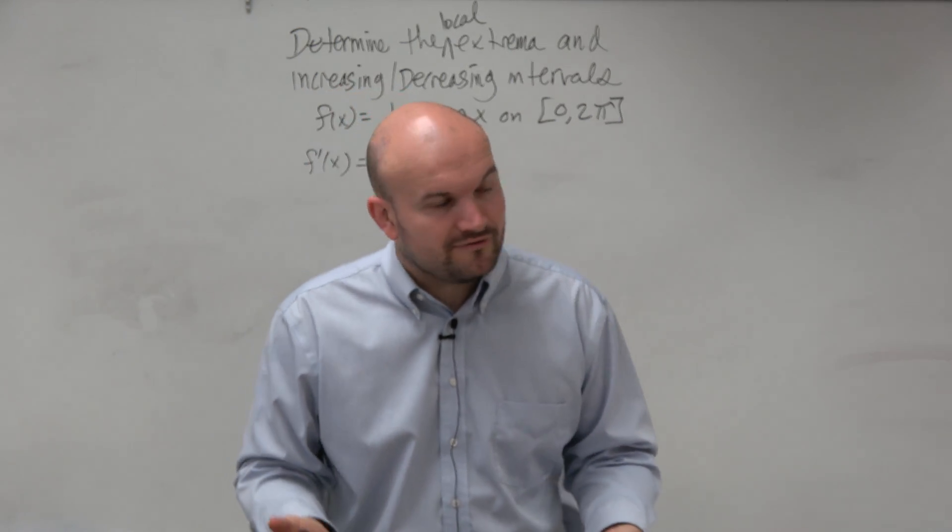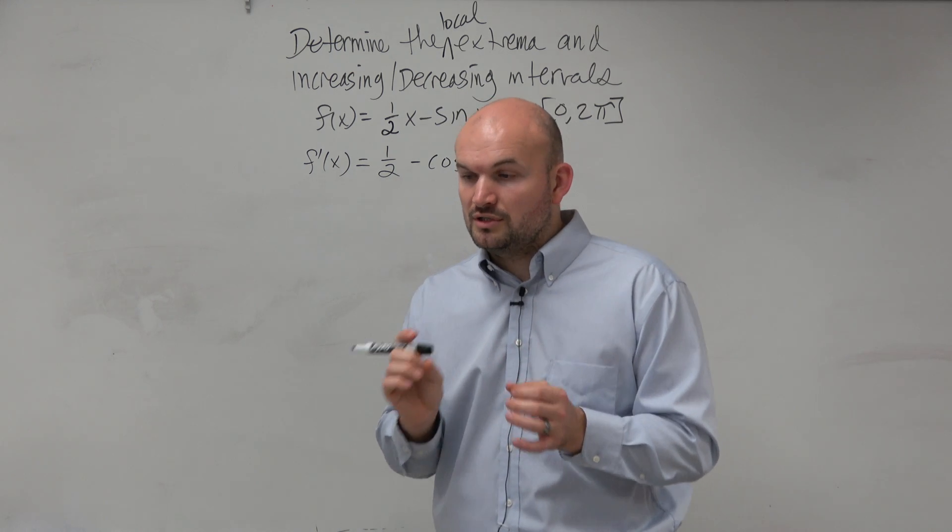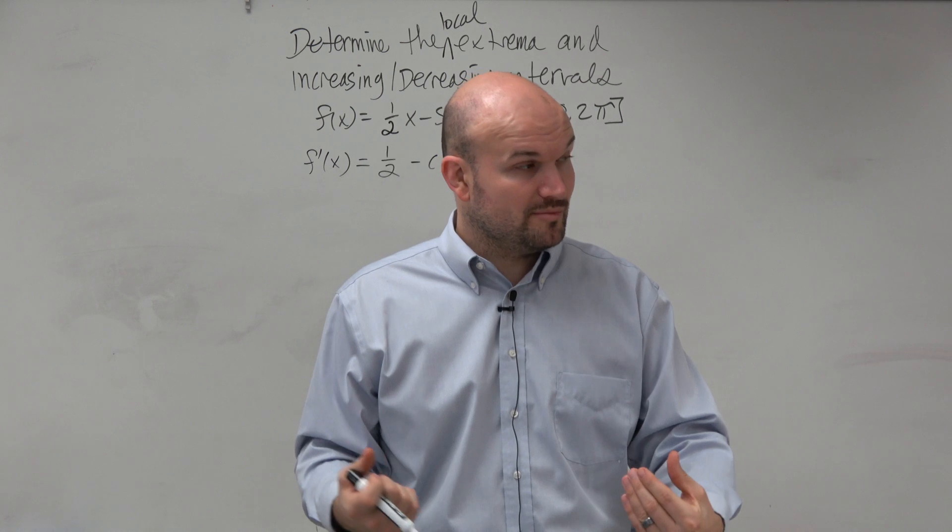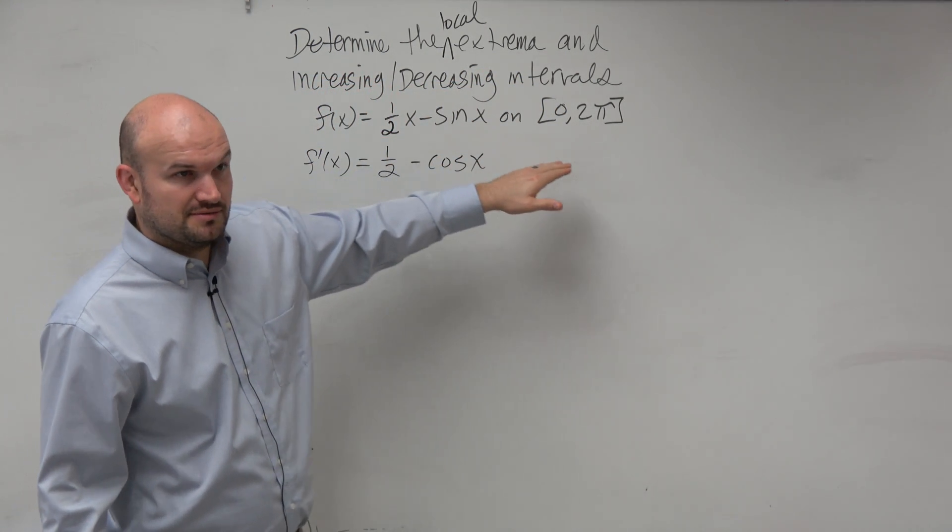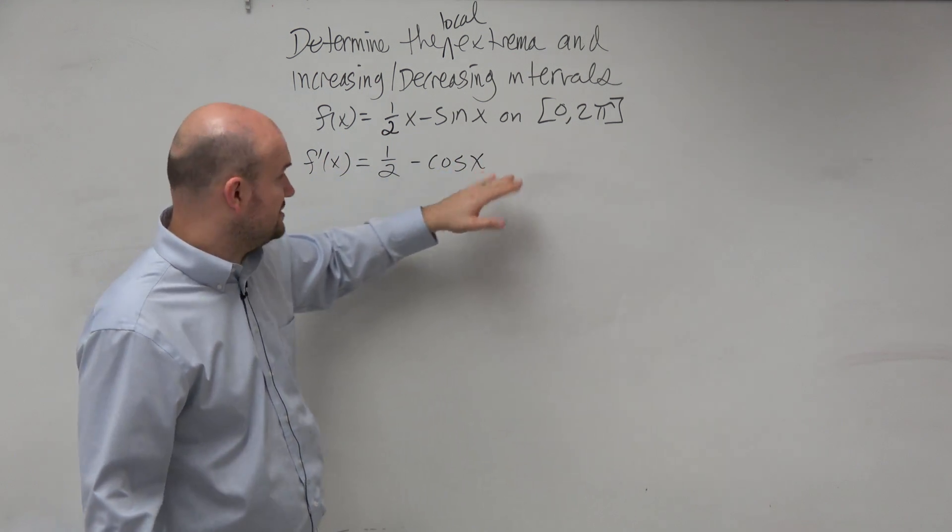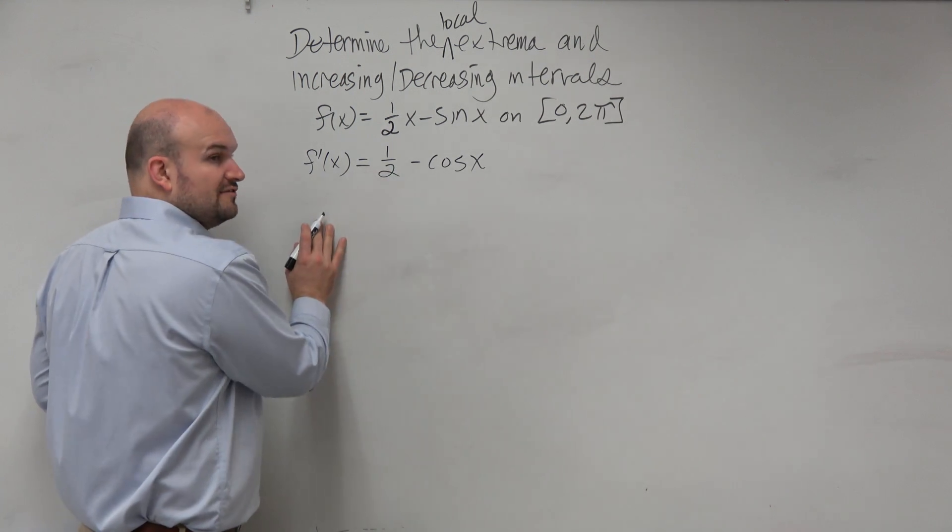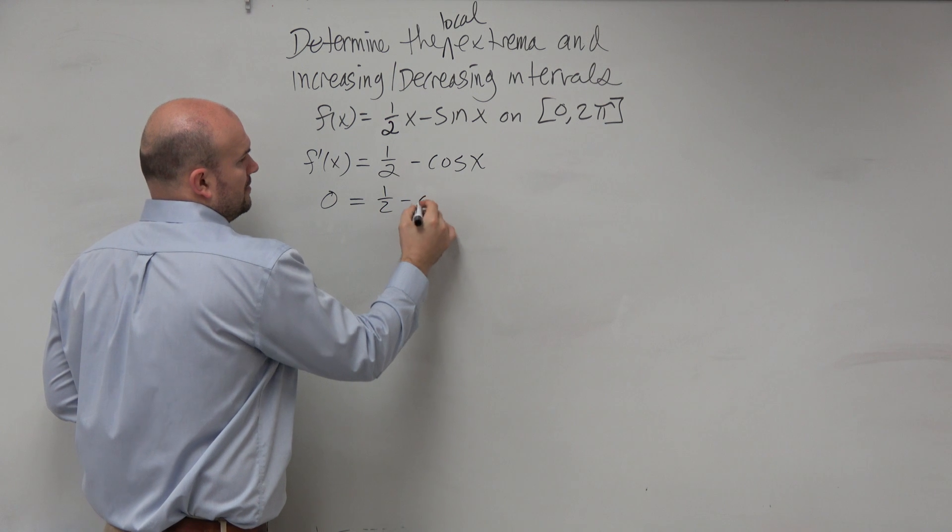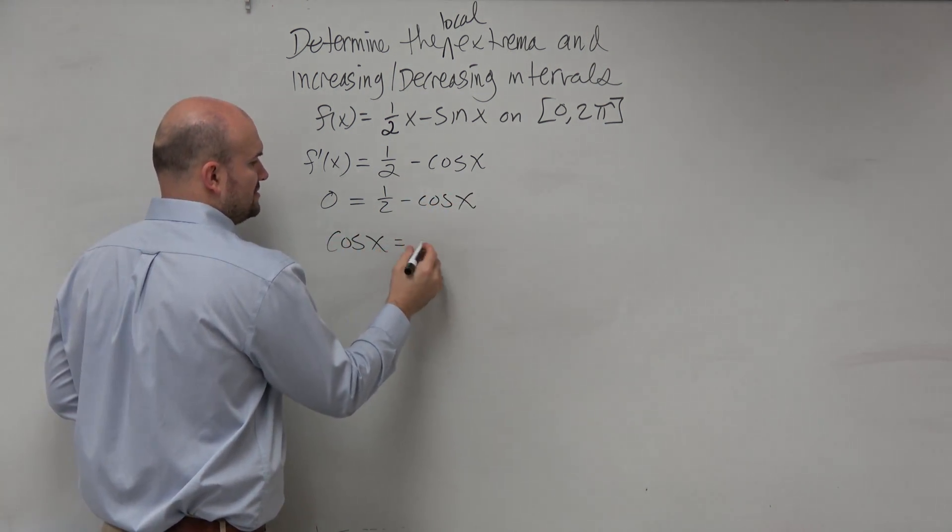So when I go ahead and find the derivative here, I'm going to have 1/2 minus cosine of x. Now, based on the first derivative test, I know that the extrema, the local extrema, is going to occur at what we call critical values, as long as they're defined in the domain. I go and set this equal to 0, and I can just say cosine of x is equal to 1/2.